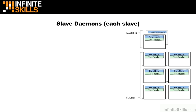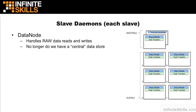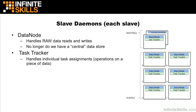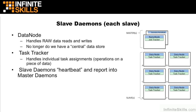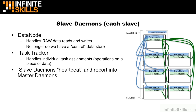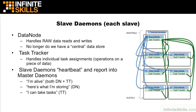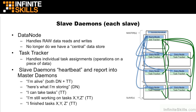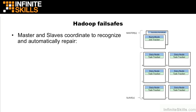Zooming in on the slave daemons: on each slave, we have a data node, which handles the raw data storage reads and writes. In Hadoop, we no longer have a central data store. Processing tasks are handled by a long-running daemon called the task tracker, which handles individual task assignment operations on a single piece of data. Each of these slave daemons, on a short-term basis — typically just a few seconds — heartbeat and report into the master daemons. These heartbeats consist of messages like: 'I'm alive and I'm here,' 'here's what I'm storing,' 'I can take tasks,' 'I'm still working on tasks,' or 'I finished tasks.'